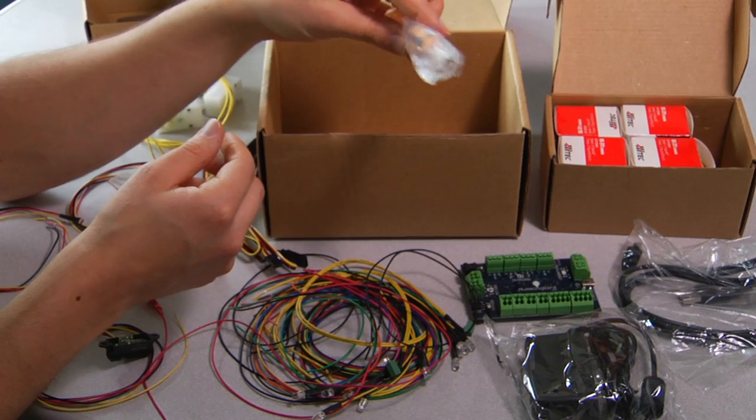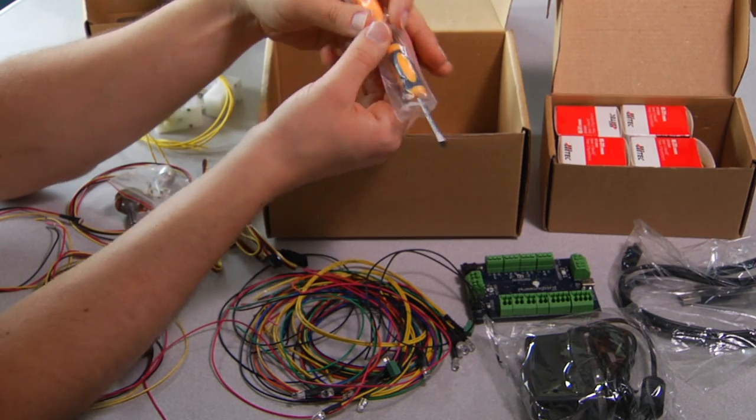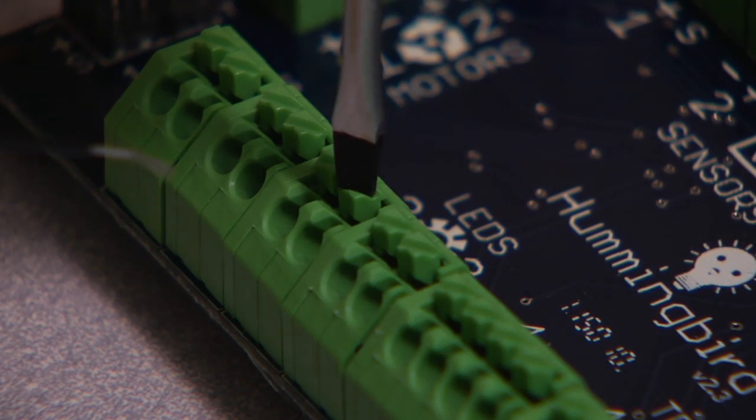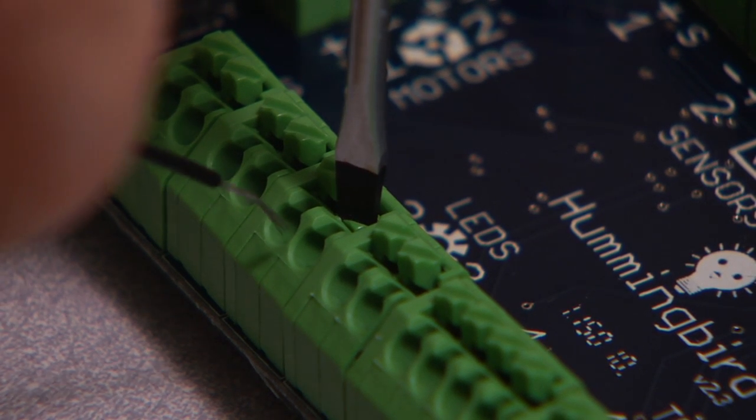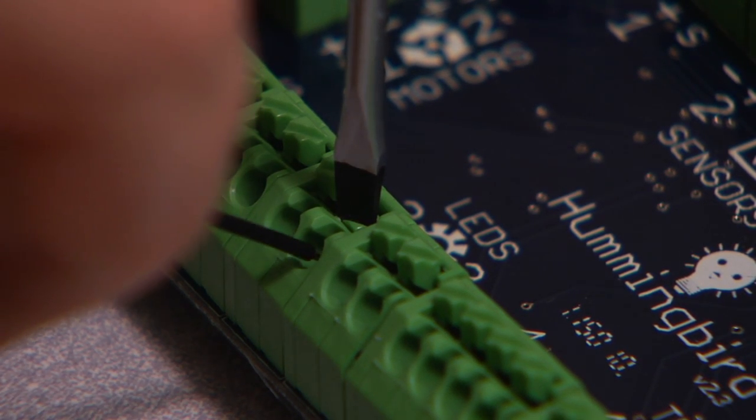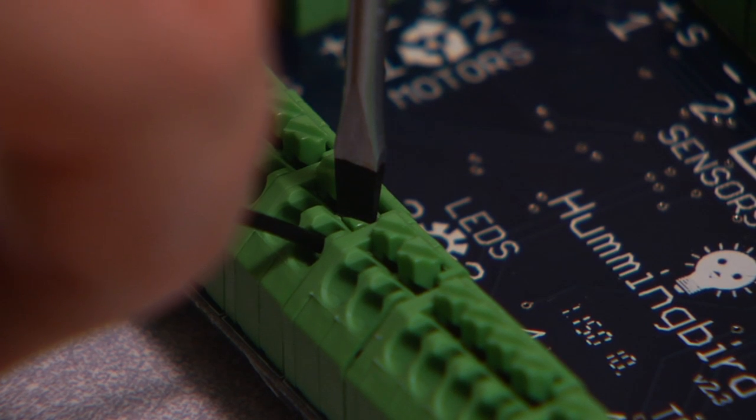Surprise, there's still one other thing in the kit. This small flathead screwdriver. I push down with my screwdriver on the tab. I push the wire in at about a 45 degree angle. Release the tab.